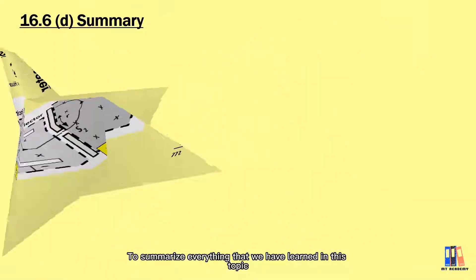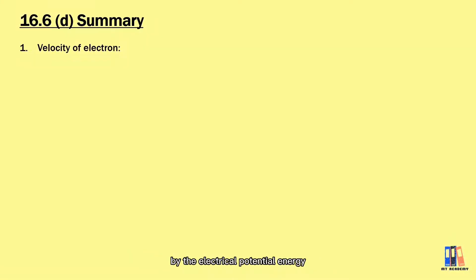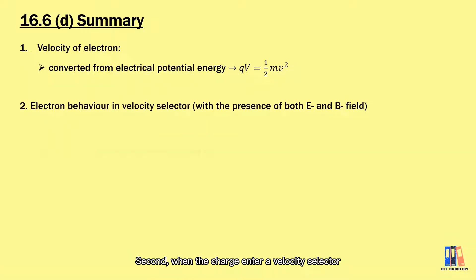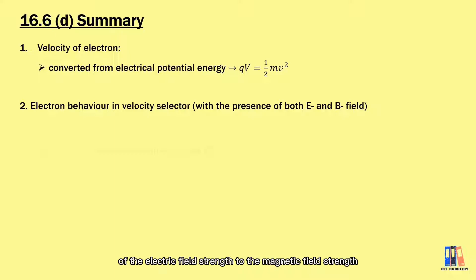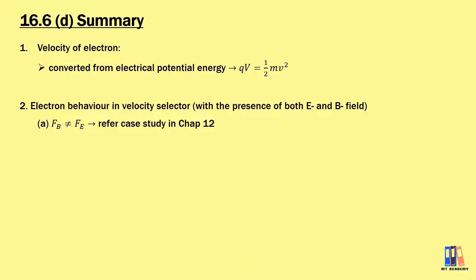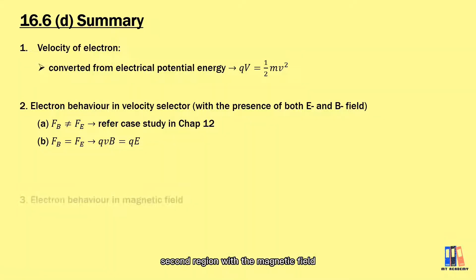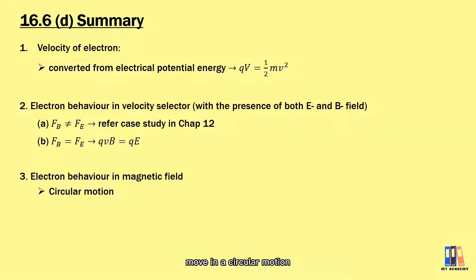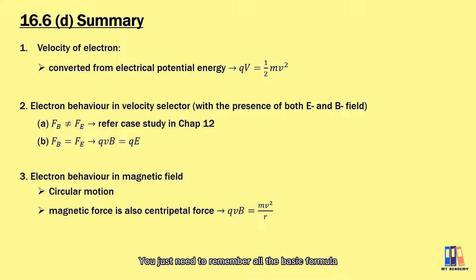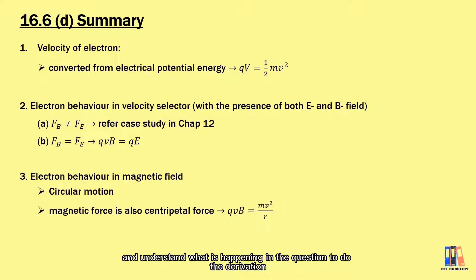To summarize everything we have learned: first, the velocity of the electron is provided by electrical potential energy, and we can derive that v equals the square root of 2qV divided by m. Second, when the charge enters a velocity selector, there are three possible outcomes depending on whether the velocity is equal to, less than, or greater than the ratio of the electric field strength to the magnetic field strength. If the electron moves horizontally and enters a second region with a magnetic field, the electron moves in circular motion, where magnetic force qvB equals centripetal force mv² over r. You just need to remember the basic formulas and understand what is happening in each scenario to perform the derivations.